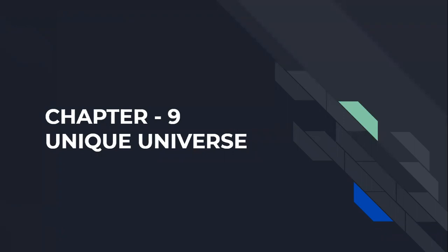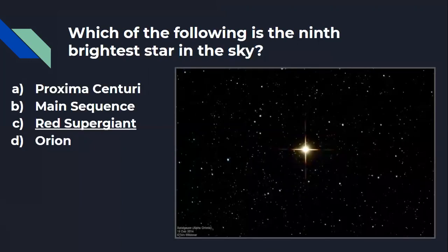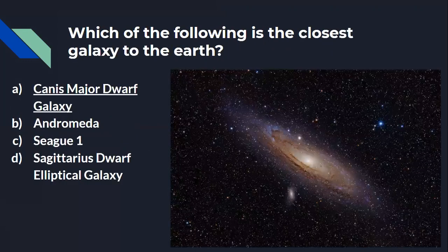This is an interesting chapter — the unique universe around us. In which year did the Spirit and Opportunity Rovers land on Mars? The answer is 2004. Which of the following is the ninth brightest star in the sky? It is Red Supergiant. Which of the following is the closest galaxy to the earth? The closest galaxy to the earth is Canis Major Dwarf Galaxy.